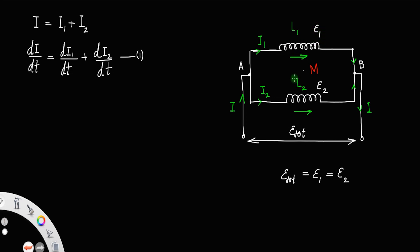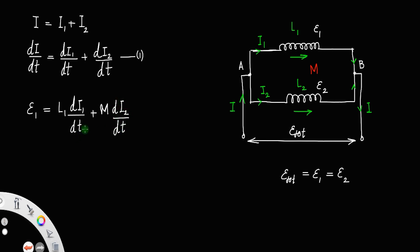Now let us consider EMF E1. The EMF across the first inductor will be due to two reasons: one, due to self-induction, that is L1 times dI1/dt, plus the EMF due to mutual induction, that is M times dI2/dt, since the flux due to mutual induction arises from the current in the second coil. This gives us equation number 2.